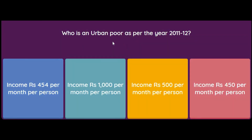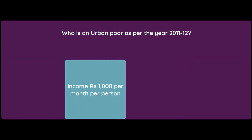Who is an urban poor as per the year 2011–12? A person with income of Rs. 454 per month, Rs. 1000 per month, Rs. 500 per month, or Rs. 450 per month? The answer is Rs. 1000 per month per person.